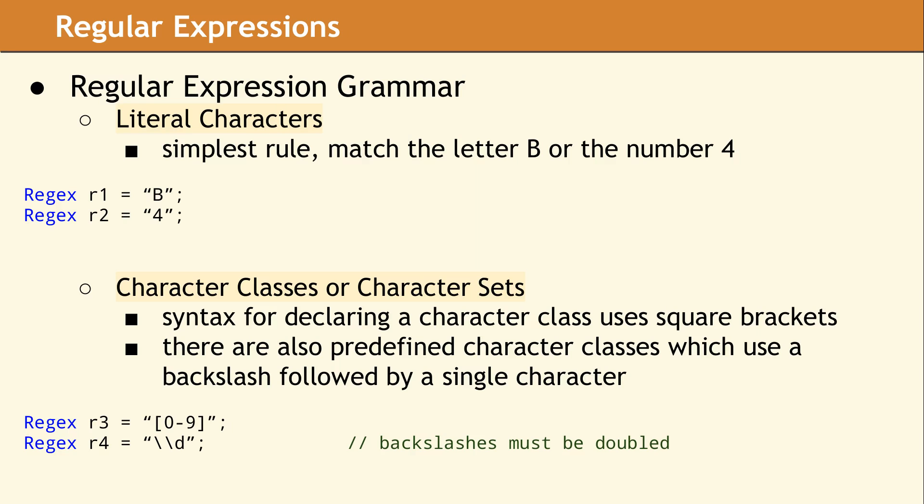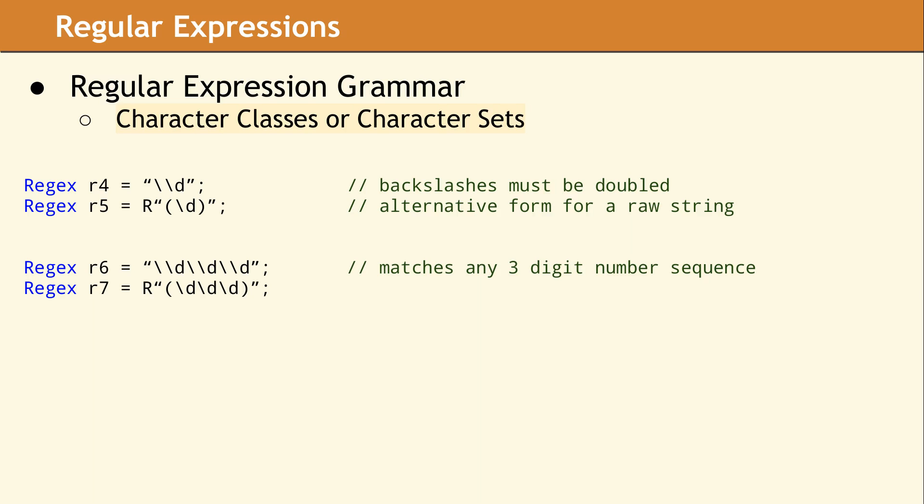The grammar for a character class is denoted by square brackets. As a convenience, there are a variety of predefined shortcuts for commonly used character classes. Both R3 and R4 will have the same result — they are both regular expressions that will match any single digit between 0 and 9. Example 4 can be written in another way using the raw string syntax introduced in C++11, yielding R5. This syntax allows you to use a single backslash rather than doubling each backslash. R6 will match any three-digit number sequence, like 234. R7 is the same pattern as R6 but is easier to read since in the raw string literal extra backslashes are omitted.